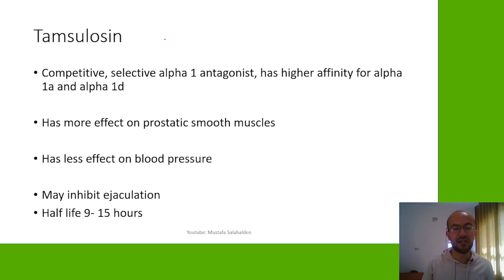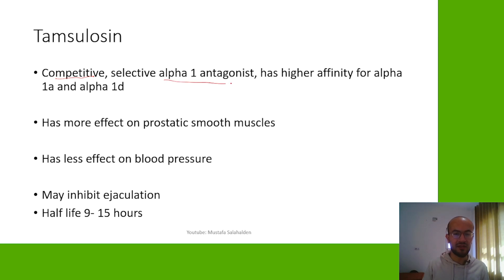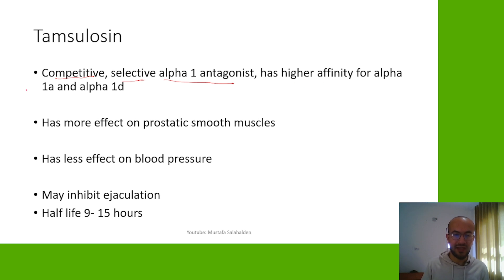Now let's talk about tamsulosin. Tamsulosin is a competitive antagonist — it competes with norepinephrine to block the alpha-1 receptors. It is selective, so it has little effect on alpha-2 receptors. Importantly, this drug has higher affinity for alpha-1a and alpha-1d subtypes, which are more expressed in the bladder and prostate.